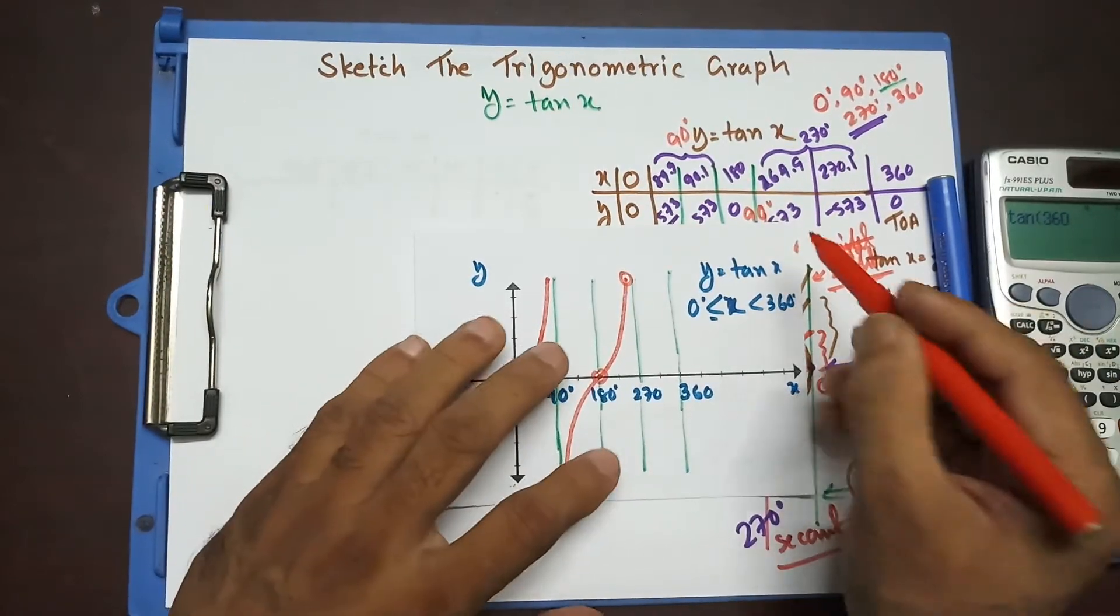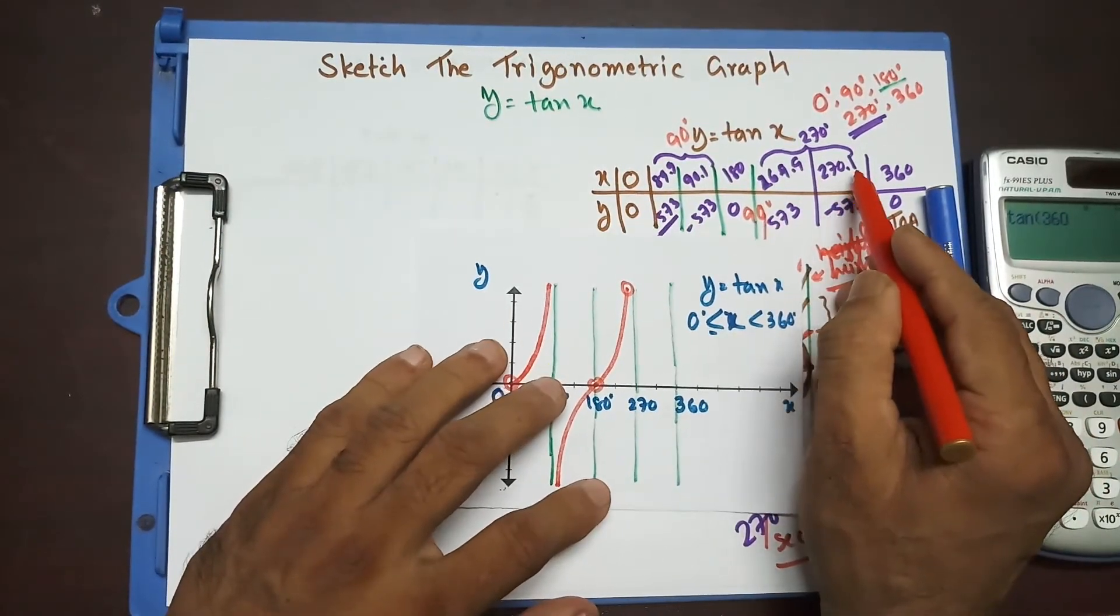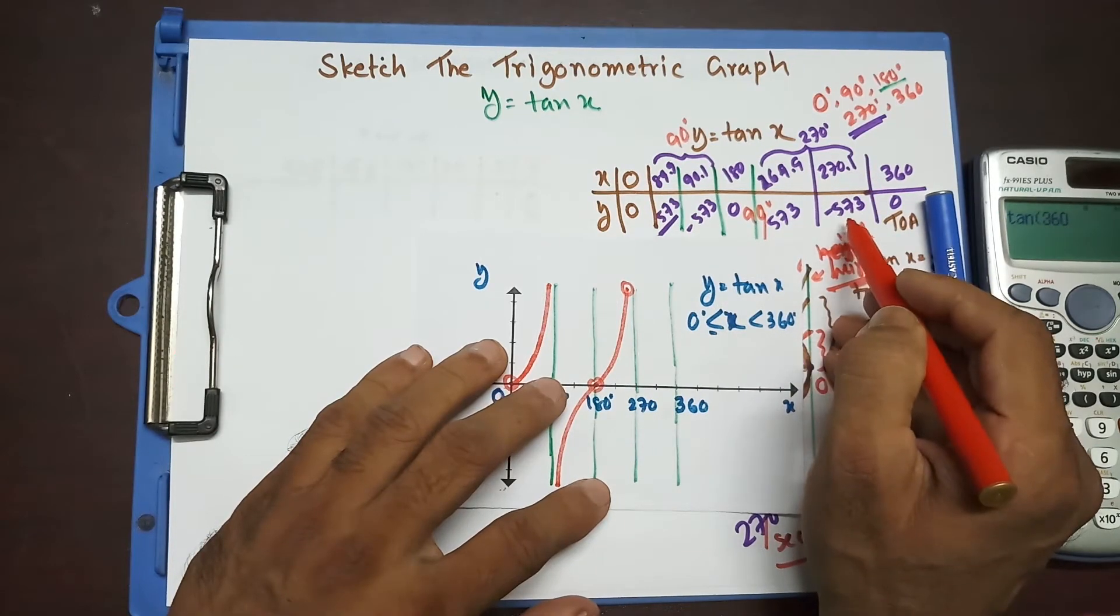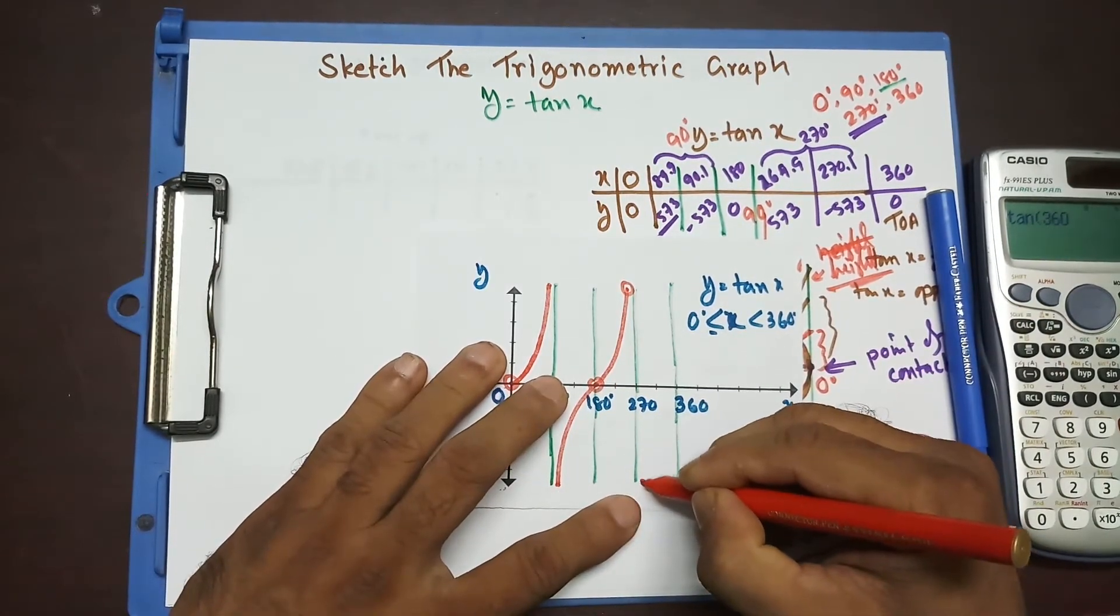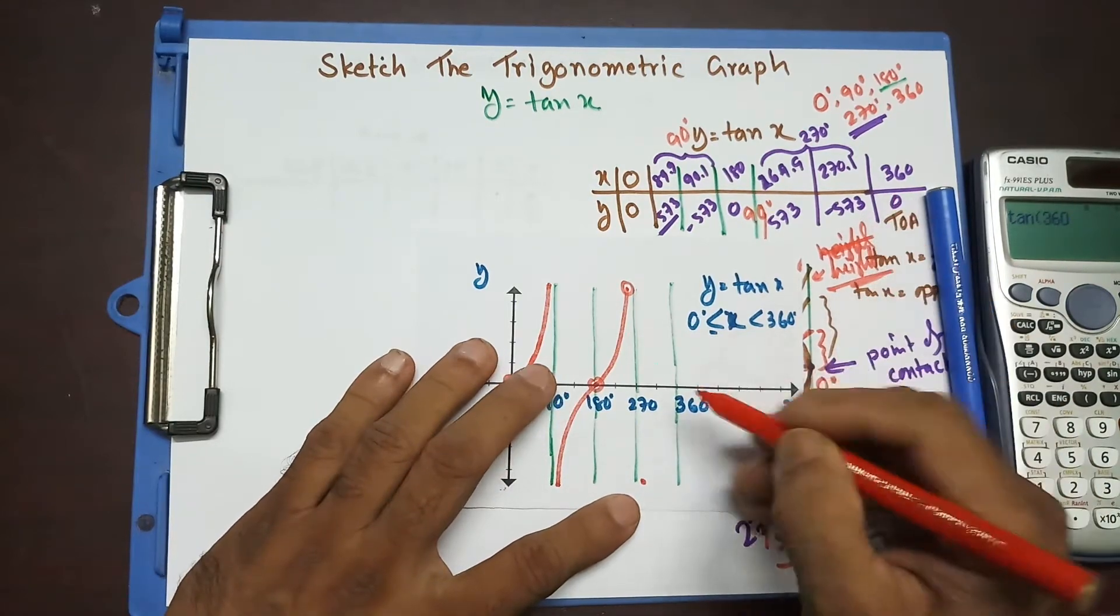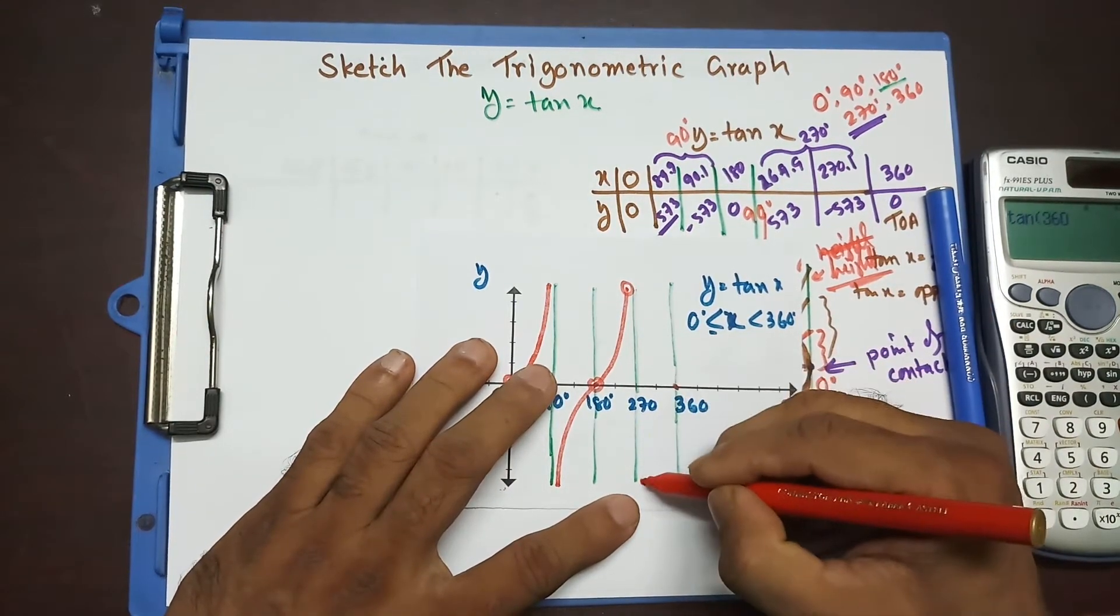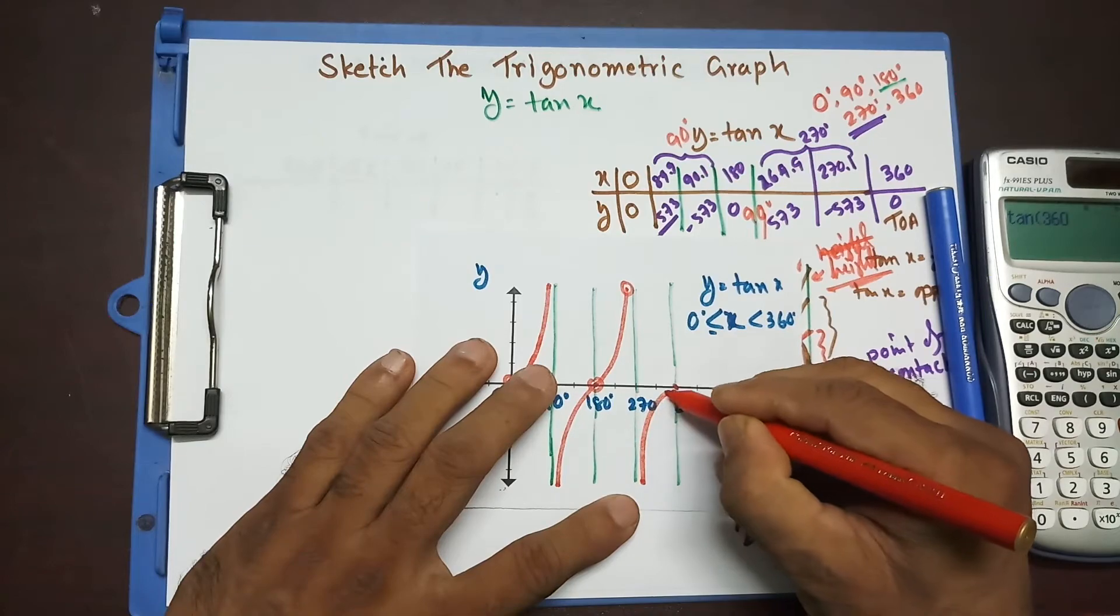Now, at 270.1, that's minus 573. Again, something like this. Somewhere over here. And at 360 degree, I'm going to have over here. Now, this one is like that.